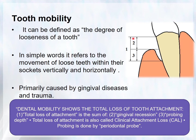The total attachment loss is called clinical attachment loss, which can be measured by a periodontal probe. This whole attachment loss is directly proportional to dental mobility or tooth mobility.